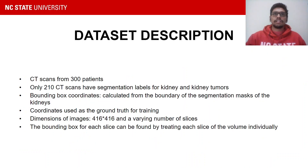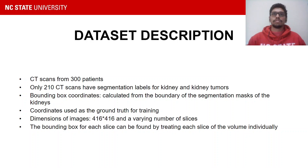The dataset contains CT scans from 300 patients. However, only 210 CT scans have segmentation labels for the kidney and kidney tumors. The coordinates are used for training the model. The major challenge for this type of data is to process the volumetric data into several image slices used as data points in training our organ detection model. We further need to maintain the segmentation masks for each slice in the respective order and calculate the bounding boxes for further analysis.